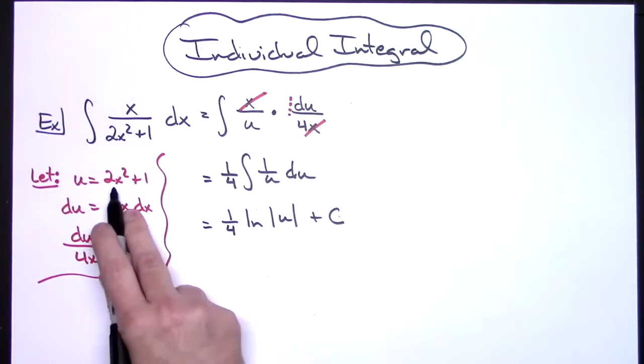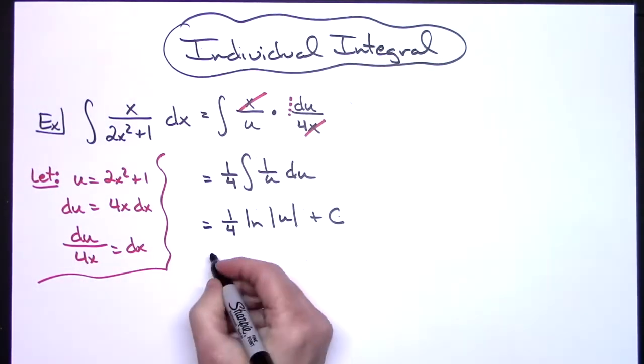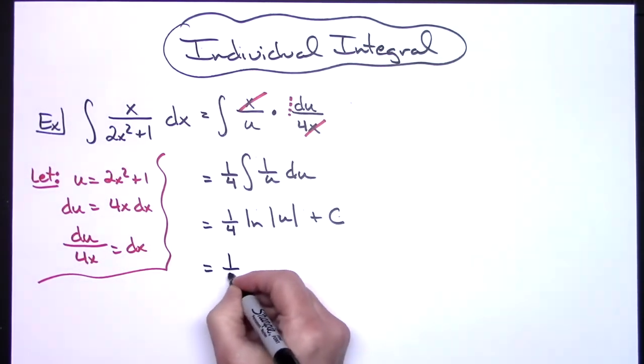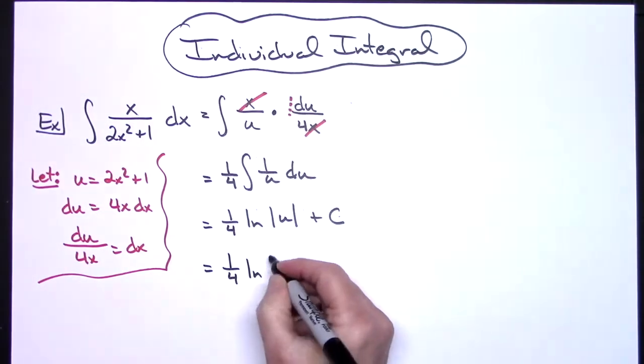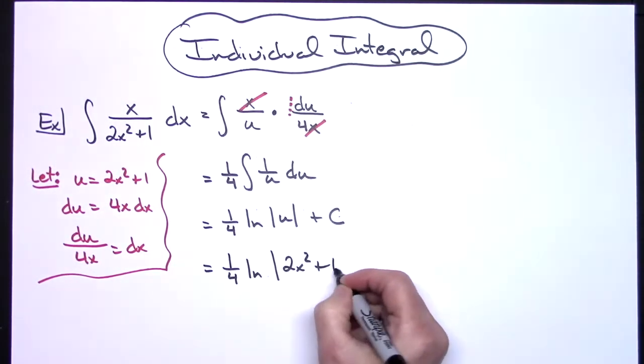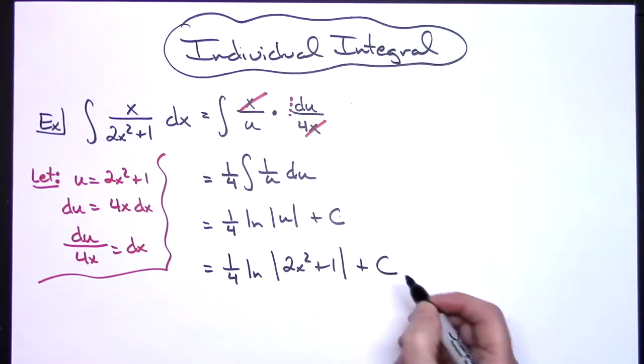Last step then would be to replace that u with what we said it was going to be equal to. So one-fourth natural log absolute value 2x squared plus 1, and then the plus C.